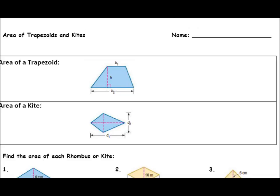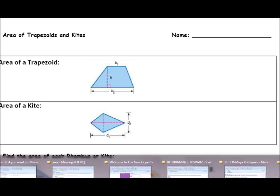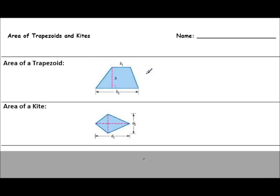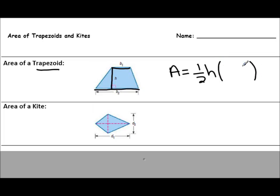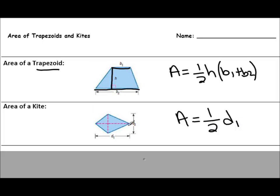Now we're going to talk about area for trapezoids and kites. For a trapezoid, if we have base 1 and base 2 and we know the height, we can find its area using the formula: 1/2 × height × (base 1 + base 2). You have to use parentheses for B1 and B2 because we need to add those together first. The area of a kite is the same as the area of a rhombus: 1/2 times the whole length of one diagonal times the whole length of the other diagonal.